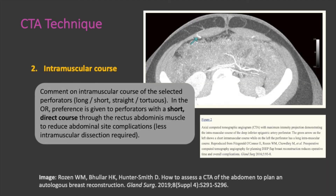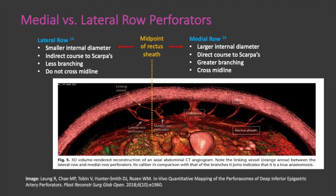Next, the intramuscular course of the perforator should be noted. This can be described as long or short, straight or tortuous. In the operating room, preference is given to perforators with a short, direct course through the rectus abdominis muscle to reduce abdominal site complications because less intramuscular dissection is required. It's helpful to know that perforators can be further categorized into a medial and lateral row. Medial row perforators exit medial to the longitudinal midpoint of the rectus sheath and tend to have a larger internal diameter, a direct course to Scarpa's fascia, and a greater branching pattern that crosses the midline. Lateral row perforators tend to have a smaller internal diameter, a transverse course to Scarpa's fascia, less branching, and do not typically cross midline.